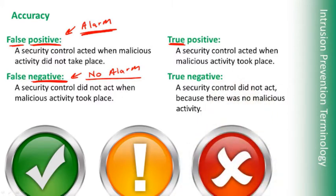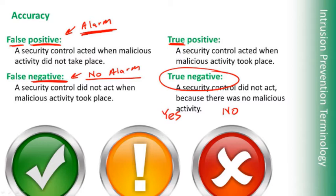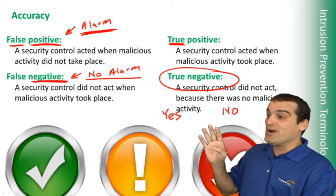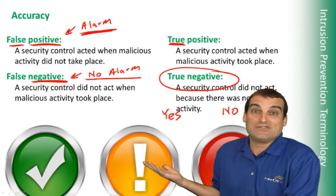Let's take an example: we have a true negative. Did an alarm fire? No. Was it a good thing? Yes, it was a good thing. So safe, non-attack traffic went through our intrusion prevention system, no alarm fired — and this was perfect.